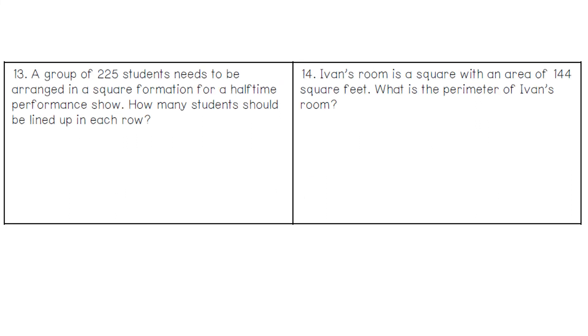For number 13, we have a group of 225 students that needs to be arranged in a square formation for a halftime performance show. How many students should be lined up in each row? If we are lining students up in a square, and we need the total to be 225, we can take the square root. The square root of 225 is 15. So our group needs to be 15 students in each row.